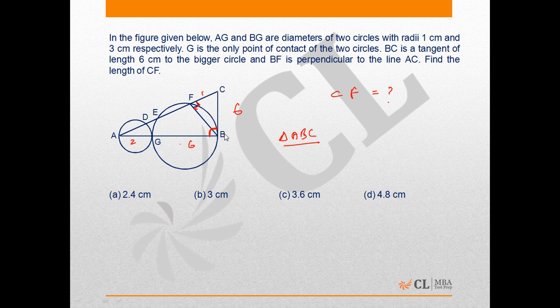So in triangle ABC, this is a right angle. AC will be 10 cm using Pythagoras theorem, as AB is 8 and BC is 6.